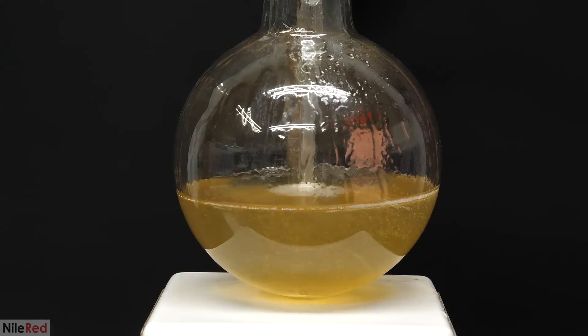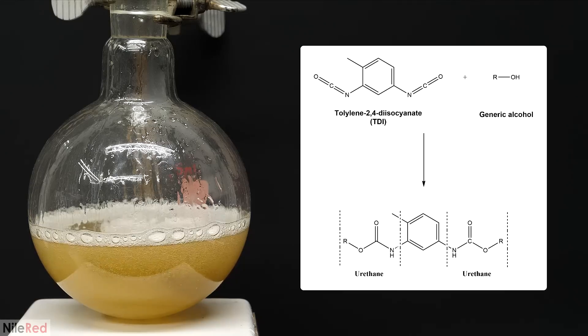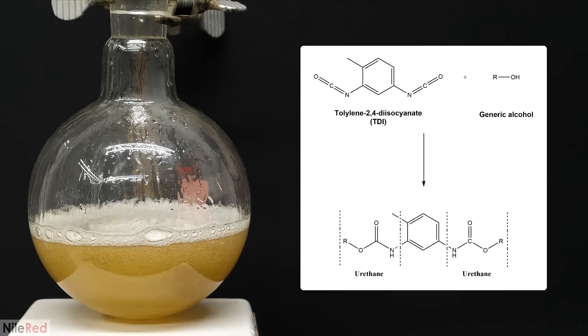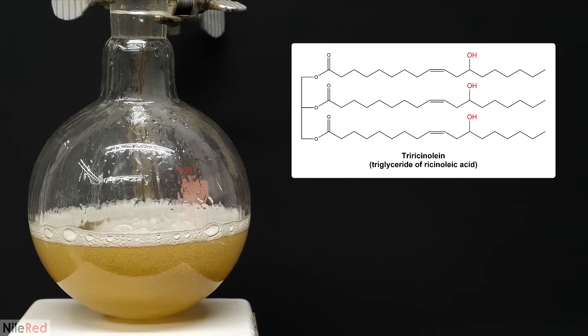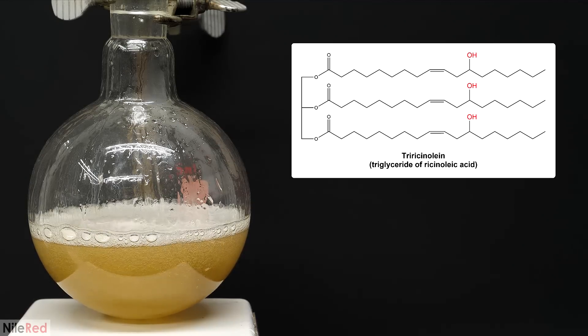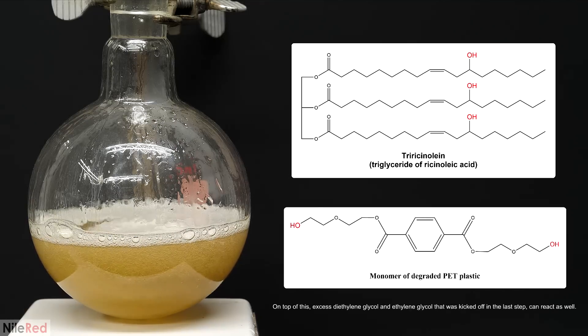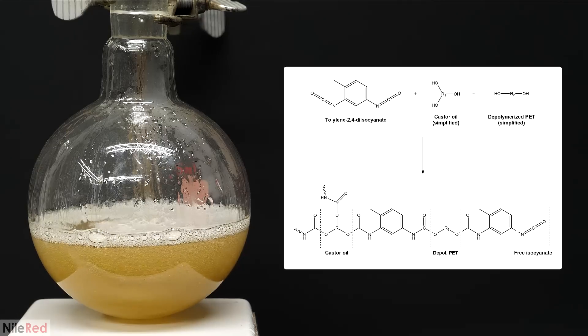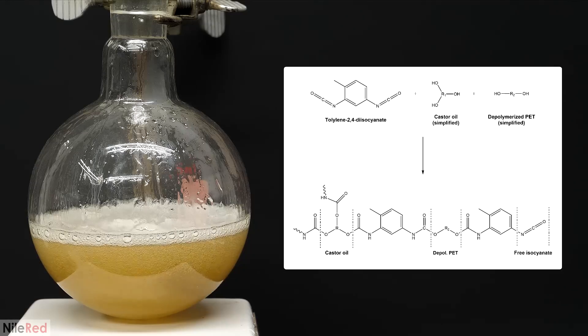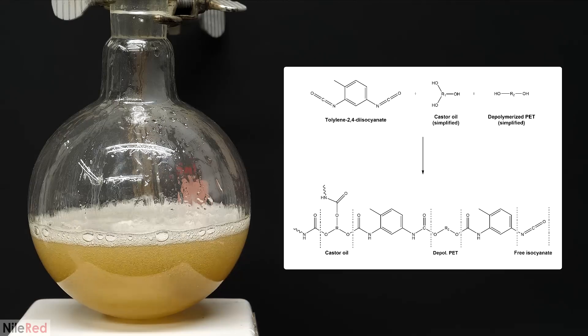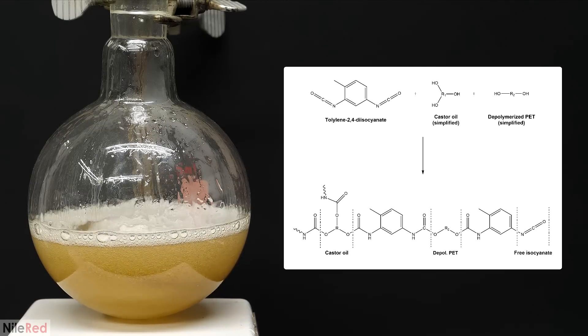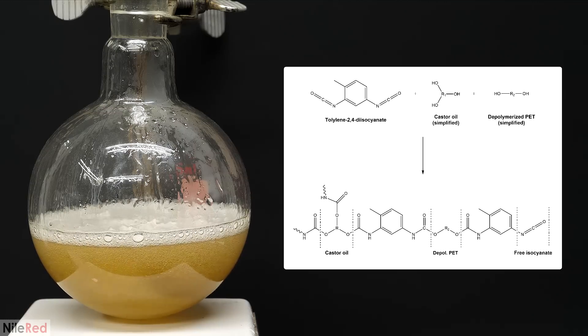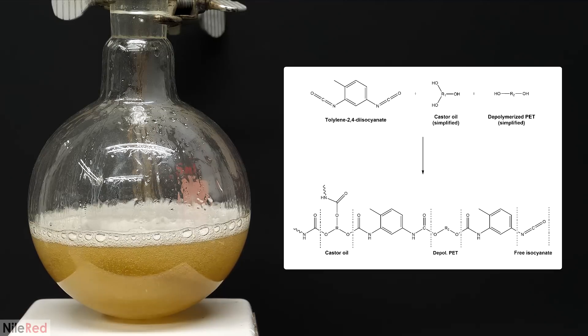Over the next 20 minutes or so, the temperature slowly rose and it started to bubble. The TDI has two isocyanate groups and each of them can react with an alcohol to make a urethane. The castor oil that was added is almost entirely a triglyceride of ricinoleic acid and it can react in three places. Also, each fragment of the depolymerized PET can react on either end. With all these ingredients added together, the castor oil and the PET fragments start attacking the TDI. This builds a new polymer chain containing many urethane groups and it's generally referred to as a polyurethane. An excess of TDI was used here though, so it didn't fully polymerize and most of the strands didn't get very long. A lot of them also have free isocyanate groups on the end and you'll see in a bit why that's important.